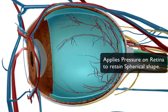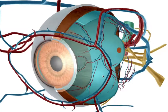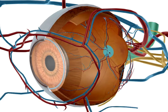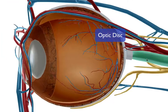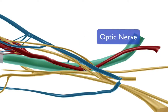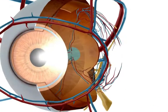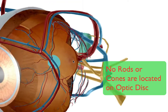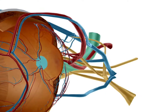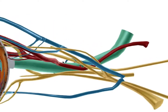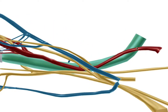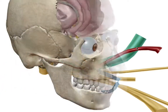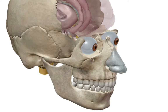Behind the retina is the optic disc — the beginning of the optic nerve, which leads back into the brain. The optic disc creates a blind spot in your visual field, but your brain fills in that empty spot. We'll follow the optic nerve and optic tract posteriorly into the brain.